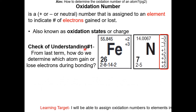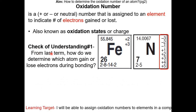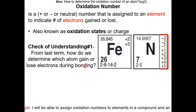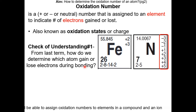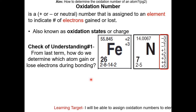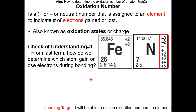Check of understanding number 1: From last term, how do we determine which atom gains or loses electrons during bonding? We know metals tend to lose electrons and non-metals tend to gain electrons. This is because metals typically have low electronegativity while non-metals typically have high electronegativity.